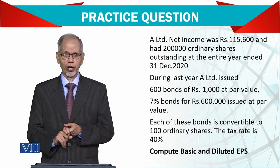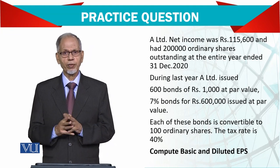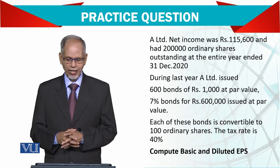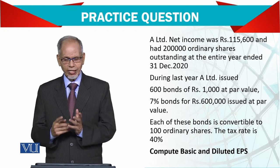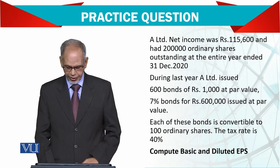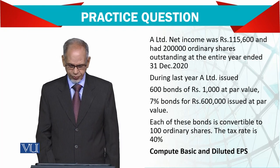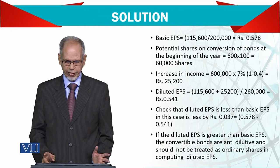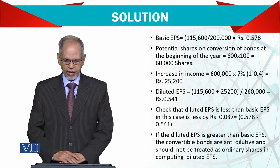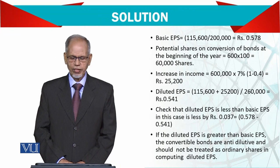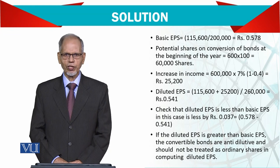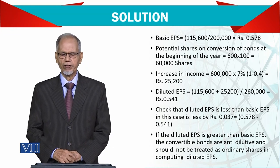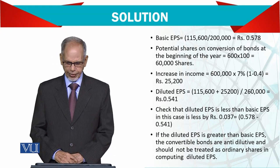The interest is 42,000, and from this you minus the tax which is 40%. The basic earnings per share is very simple: 115,600 divided by 200,000, which comes to 0.578 per share.